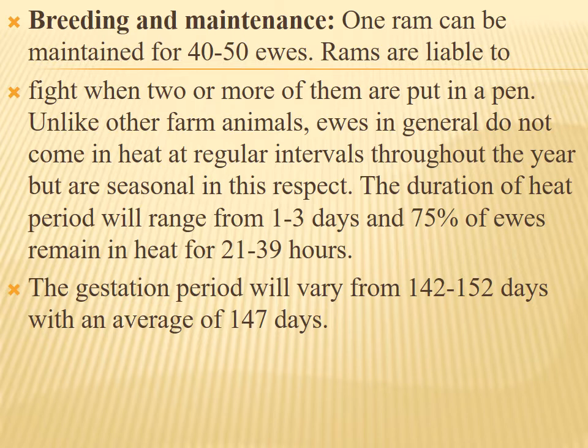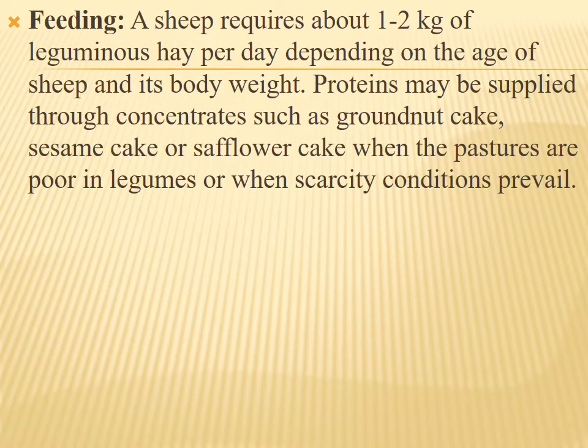The gestation period varies from 142 to 152 days with an average of 147 days. In feeding, a sheep requires about 1 to 2 kg of leguminous fodder per day depending on age and body weight. Proteins may be supplied through concentrates such as groundnut cake, linseed cake, or safflower cake when pastures are poor in legumes or when scarcity conditions prevail.